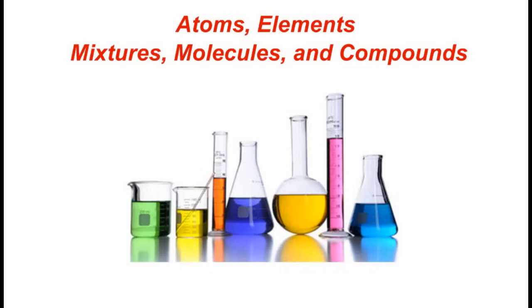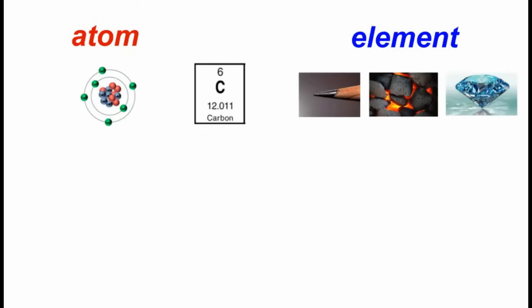It shouldn't be too difficult. You already know the first two, atoms and elements. So really what you'll be getting today are mixtures, molecules, and compounds. We already talked about atoms and elements. We said that elements can be found on the periodic table. They are pure substances. And we said that atoms are the smallest piece of an element that can still be the element.